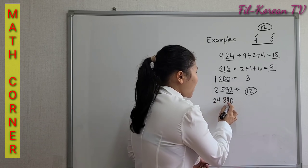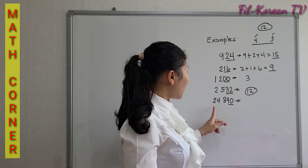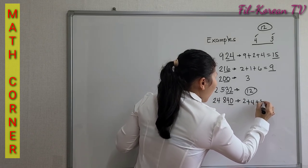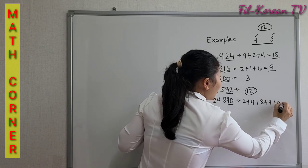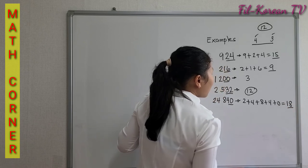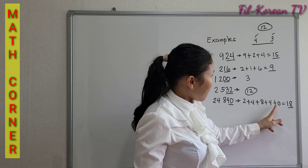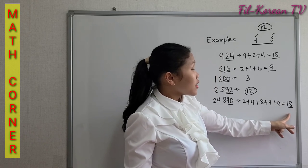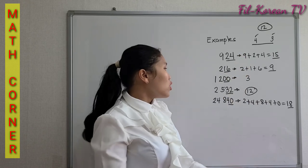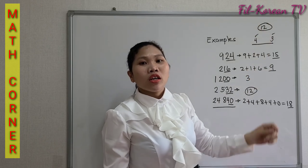Last example: 24,840. The last two digits, 40, are divisible by 4. If we add the digits, 2 plus 4 plus 8 plus 4 plus 0 equals 18. 18 is a multiple of 3, thus this number is divisible by 3. So, 24,840 is divisible by 12.